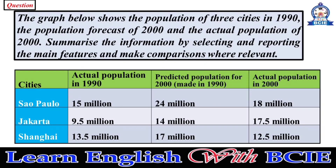The graph below shows the population of three cities in 1990, the population forecast of 2000, and the actual population of 2000. Summarize the information by selecting and reporting the main features and make comparisons where relevant.